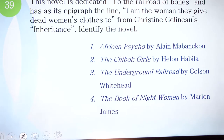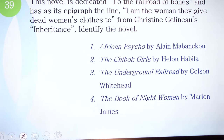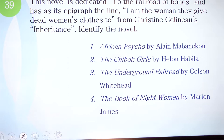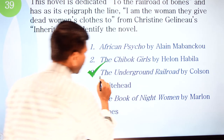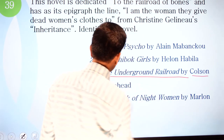Question 39: this novel is dedicated to 'the railroad of bones' and has as its epigraph the line 'and the woman they give two dead women's clothes to' from Christina Rossetti's 'Goblin Market.' Identify the novel. Options: one, American Psycho by Bret Easton Ellis; two, The Chibok Girls by Helon Habila; three, The Underground Railroad by Colson Whitehead; four, The Book of Night Women by Marlon James. The correct option is number three — The Underground Railroad by Colson Whitehead.